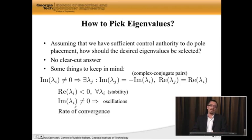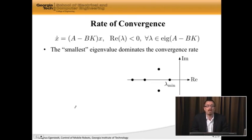The last thing is that the choice of eigenvalues affects the rate of convergence, meaning how quickly the system is stabilized. In fact, the rate of convergence is dominated by the smallest eigenvalues.